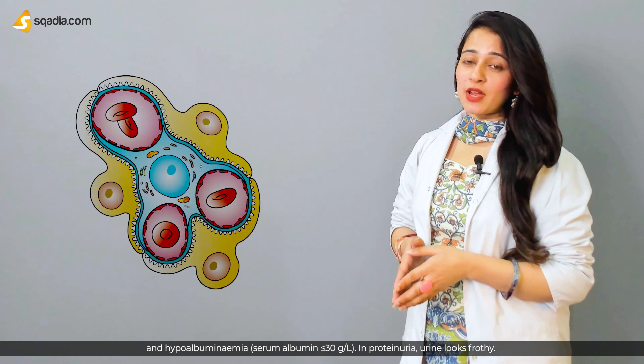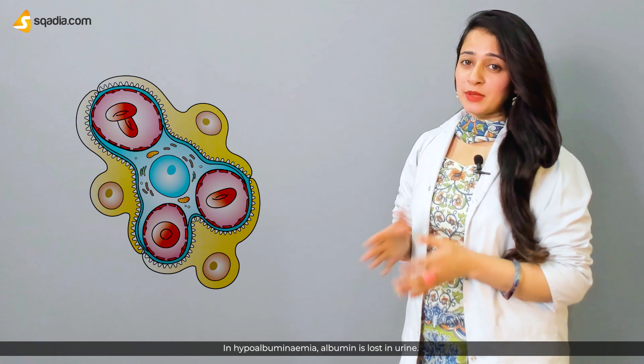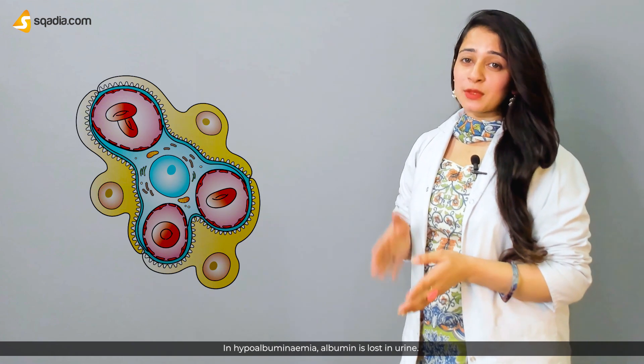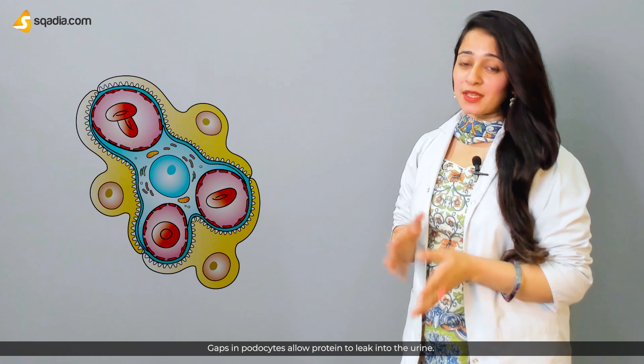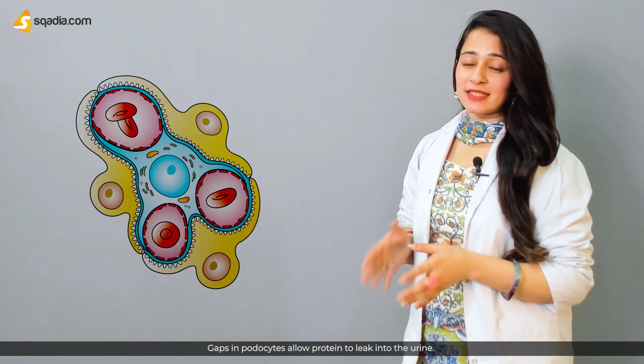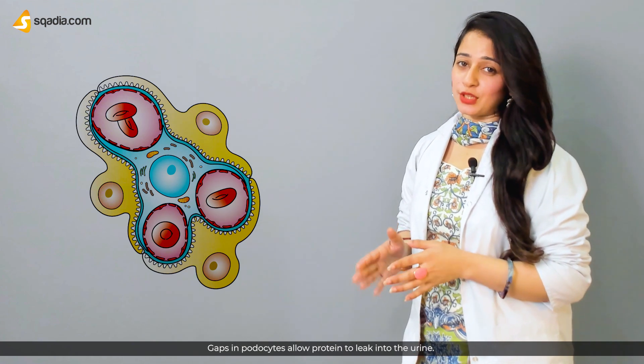In proteinuria, the urine looks frothy. In hypoalbuminemia, albumin is lost in the urine. Gaps in the podocytes allow proteins to leak into the urine.